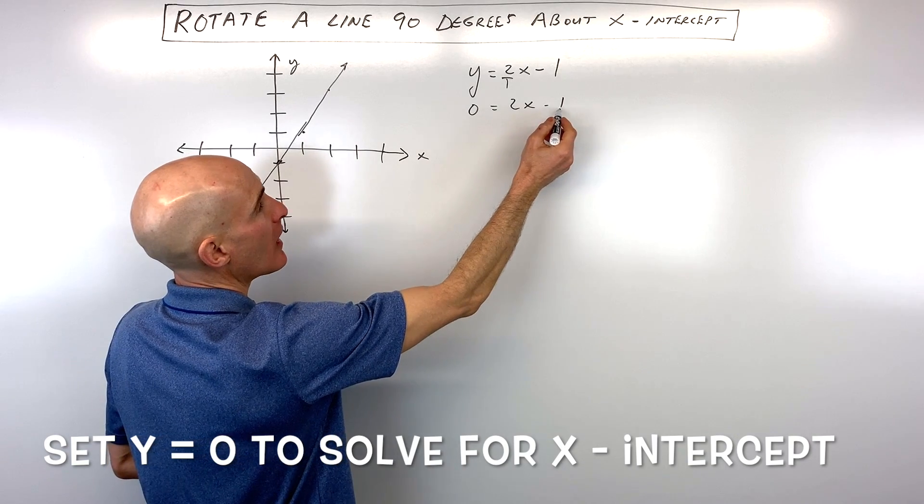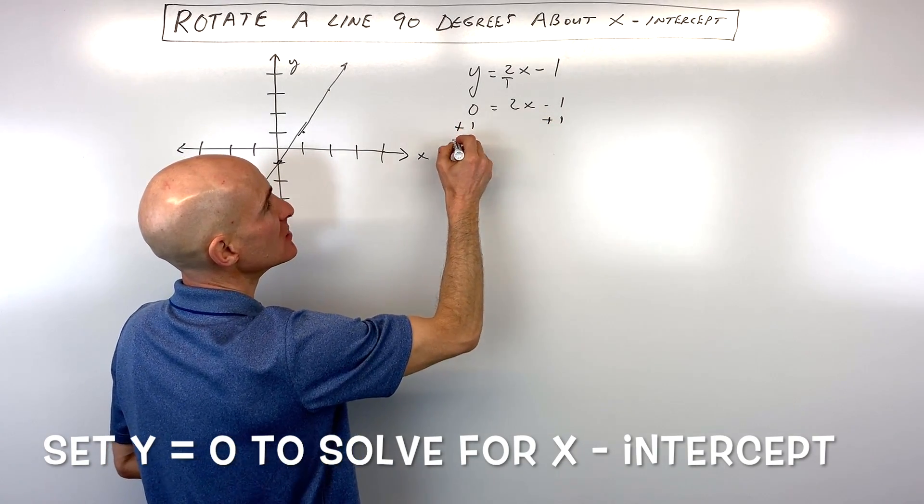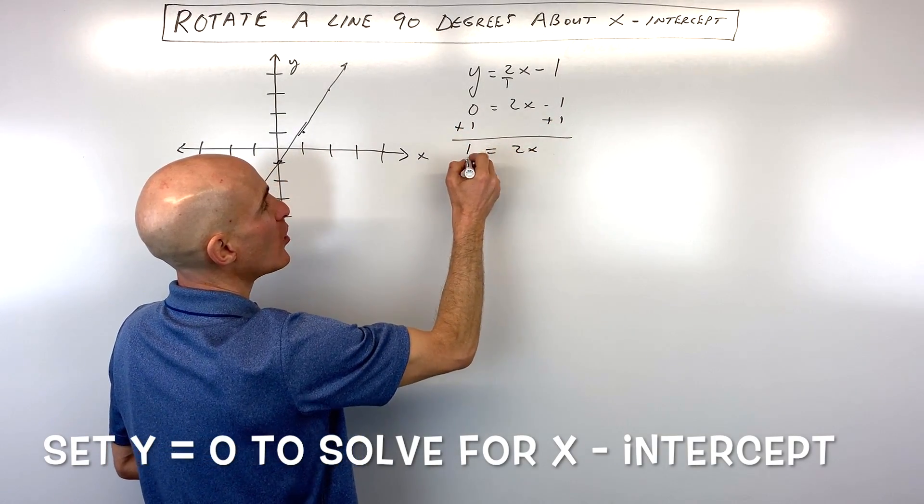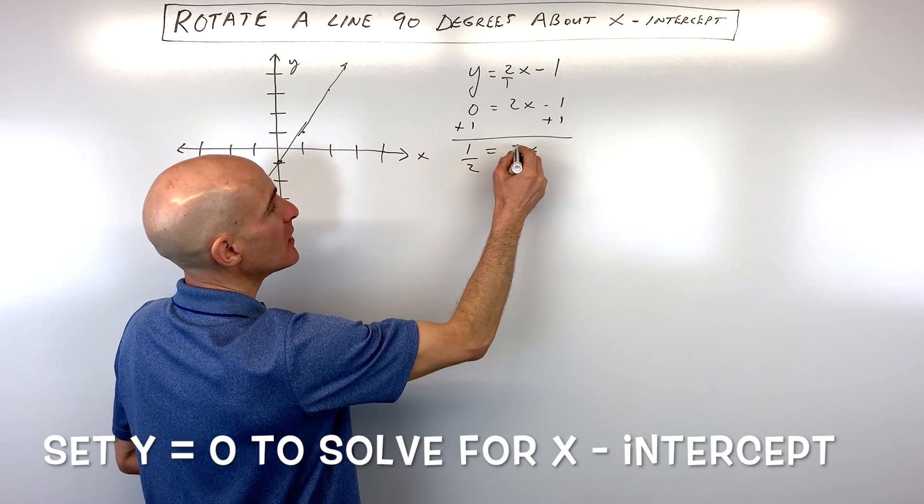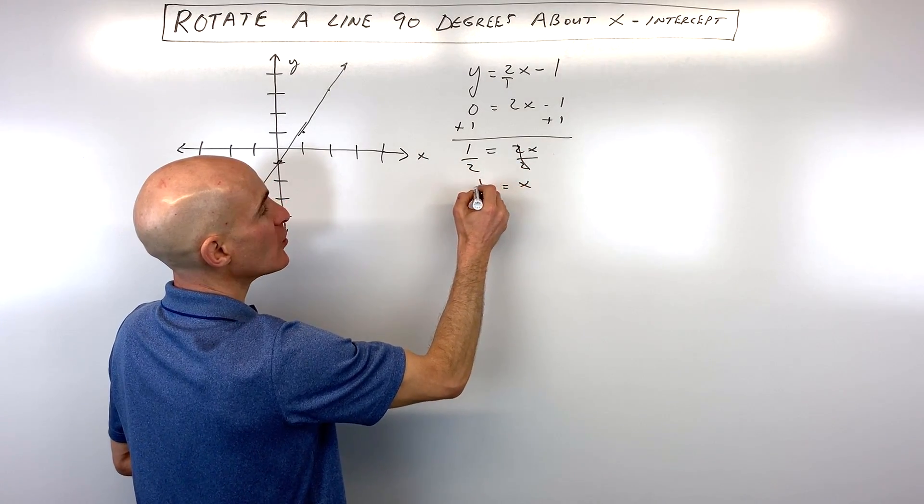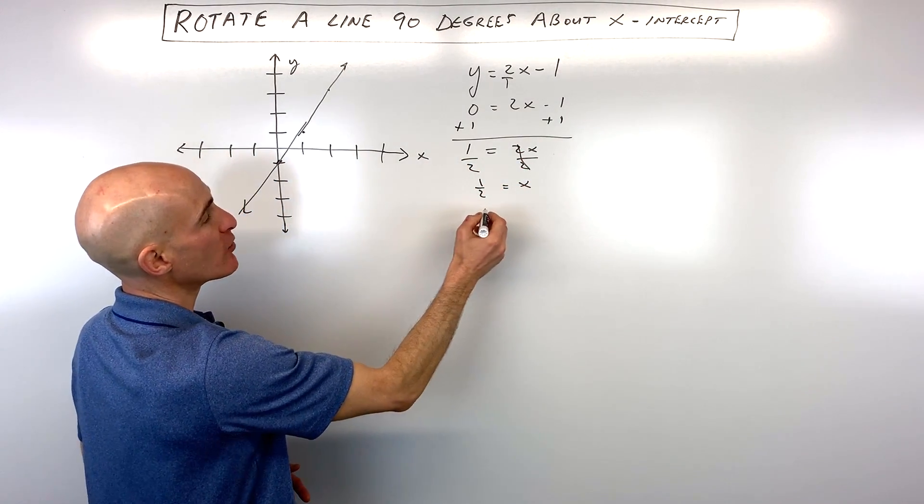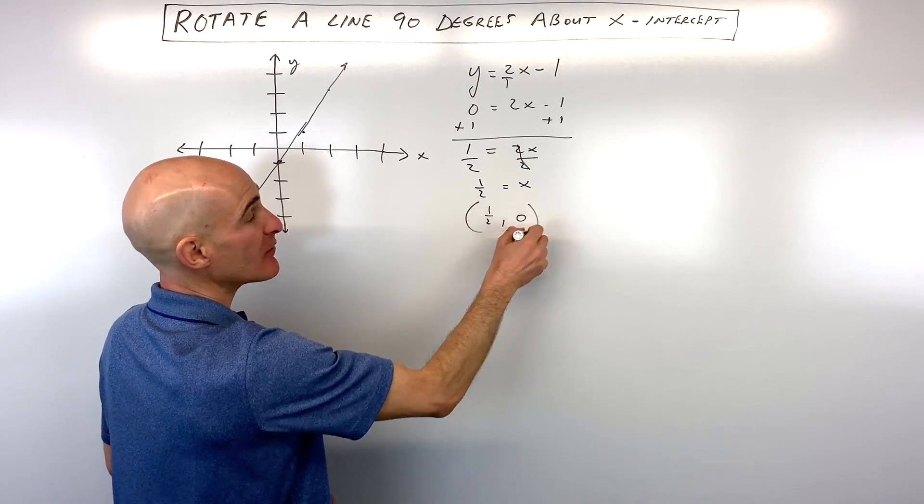So what we're going to do is set y to 0, add 1 to both sides of this equation. And we have 2x equals 1, divide both sides by 2. And you can see that x equals 1 half. So this point right here is the point 1 half comma 0.